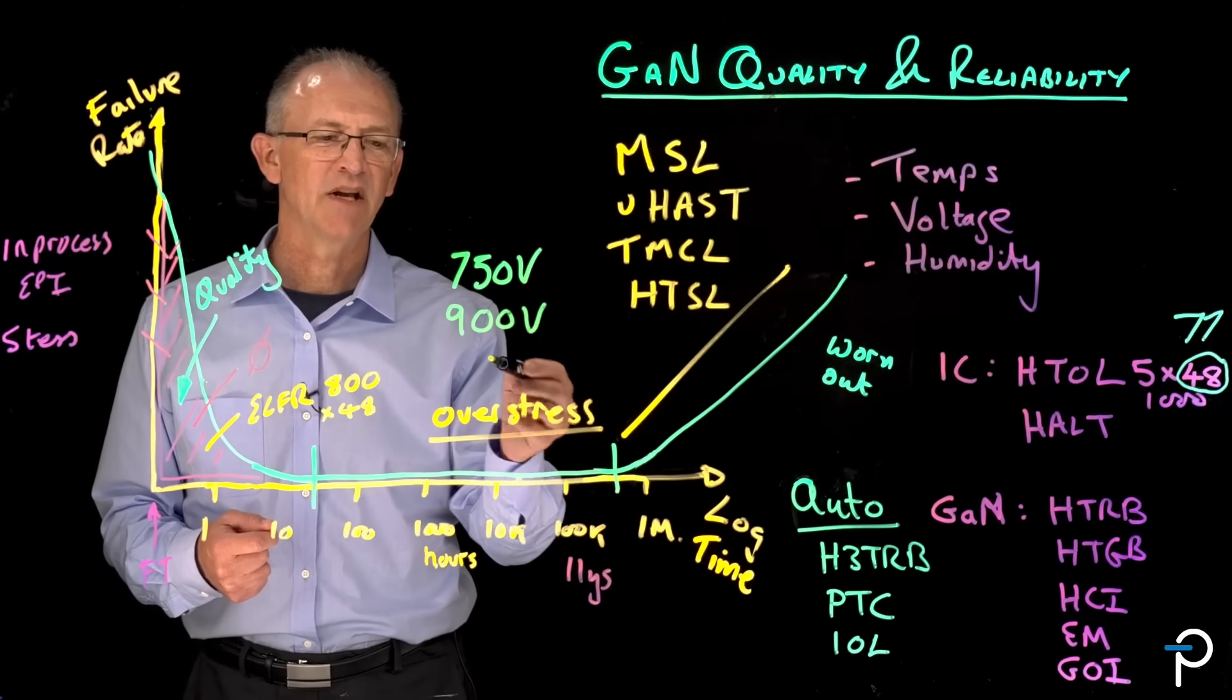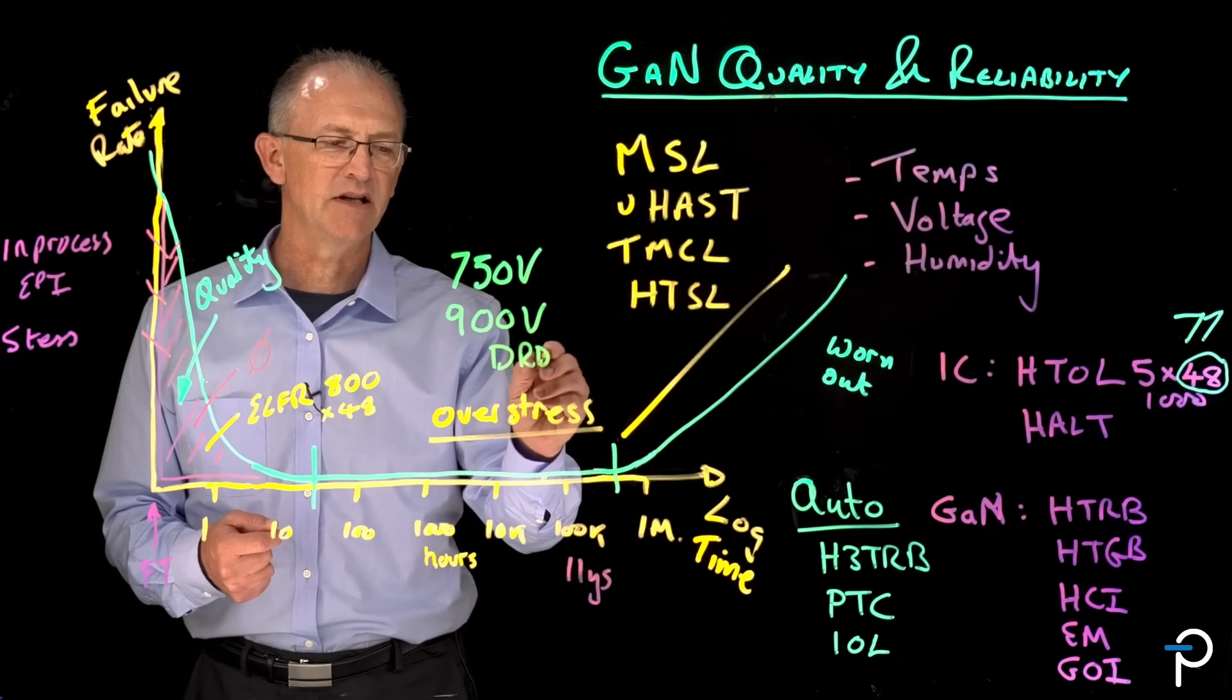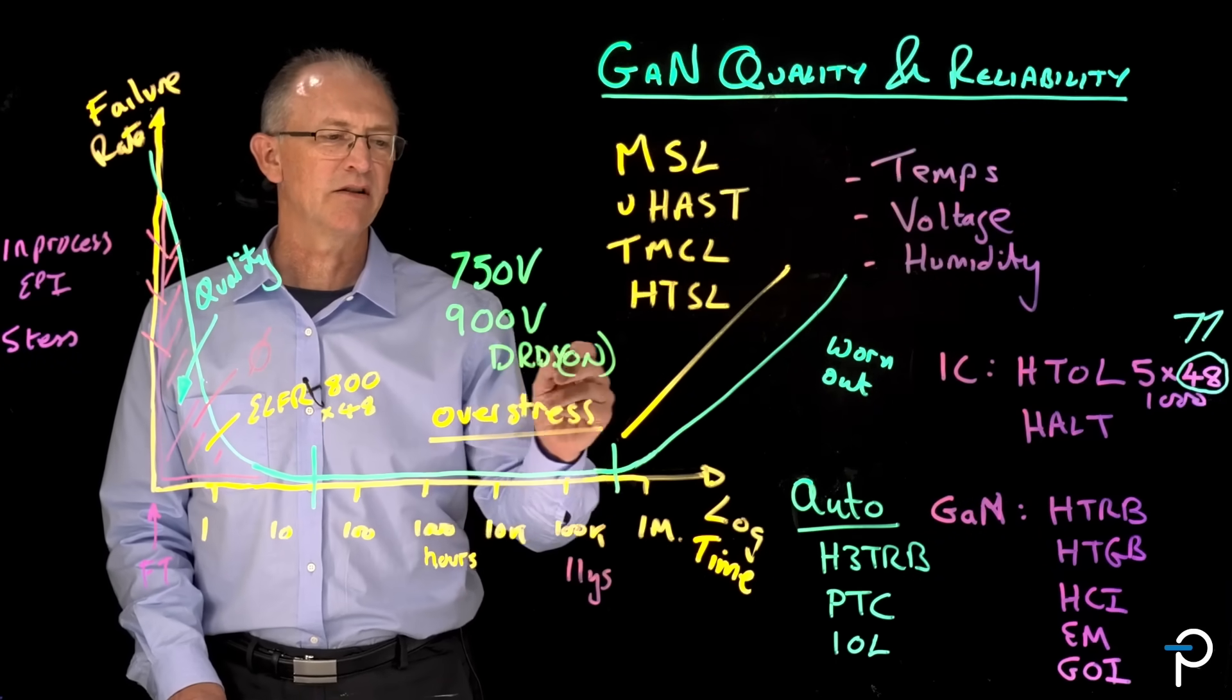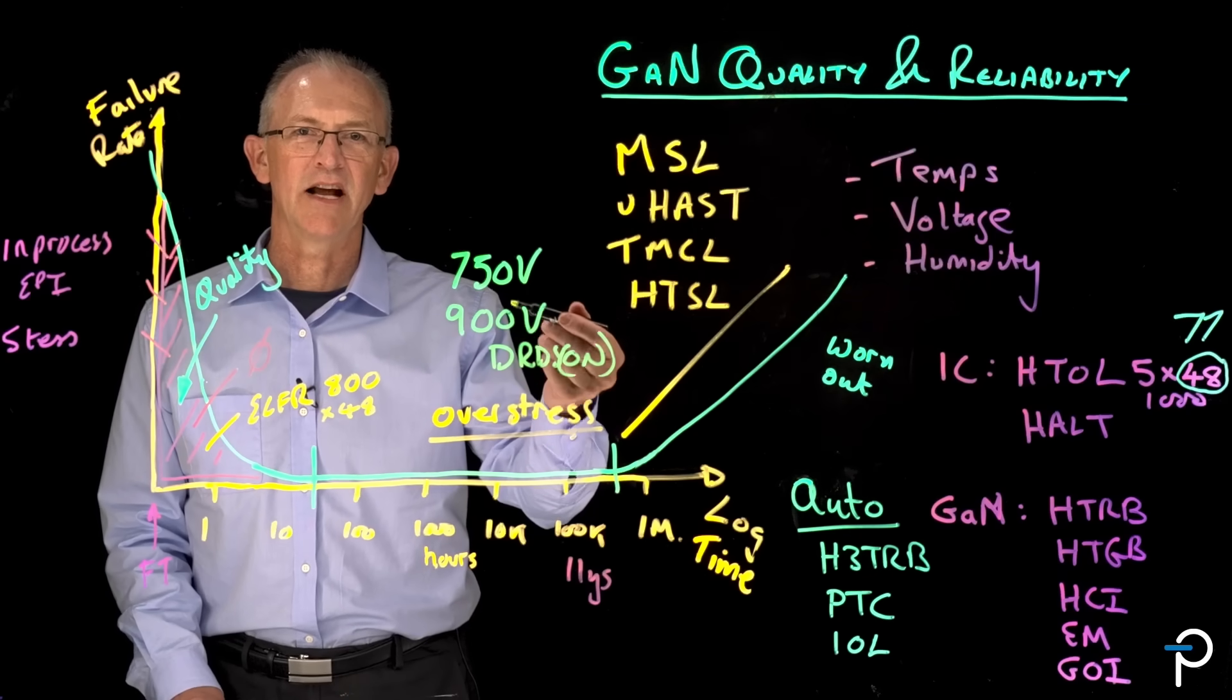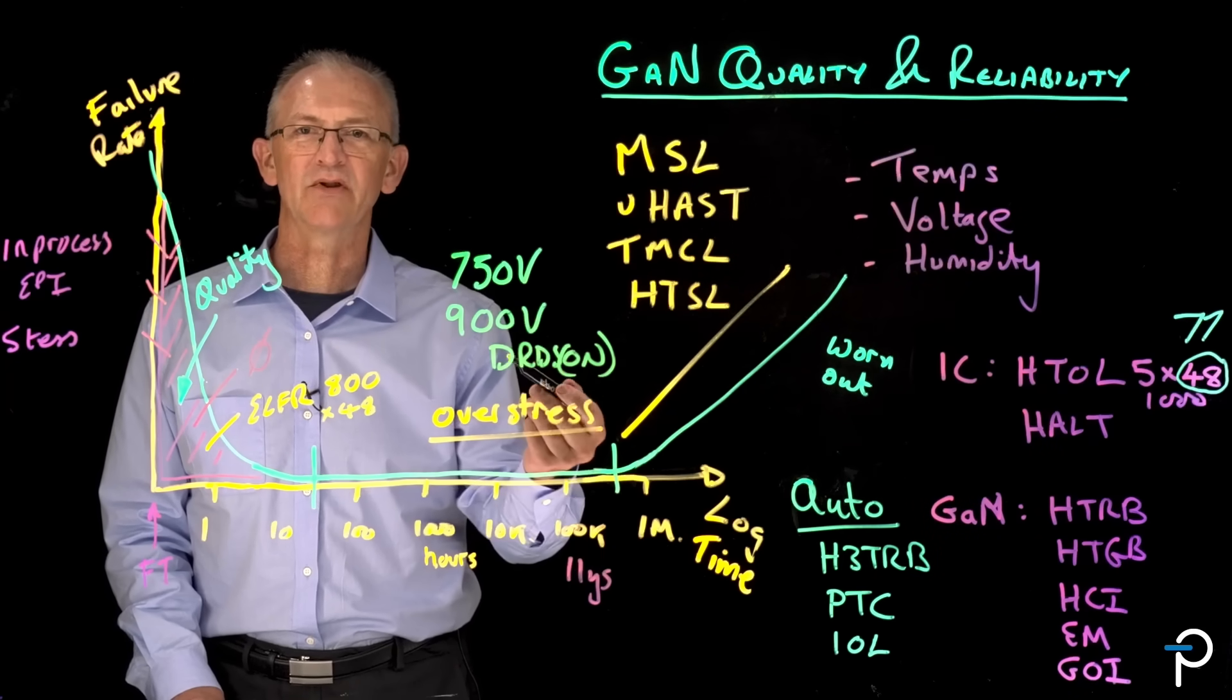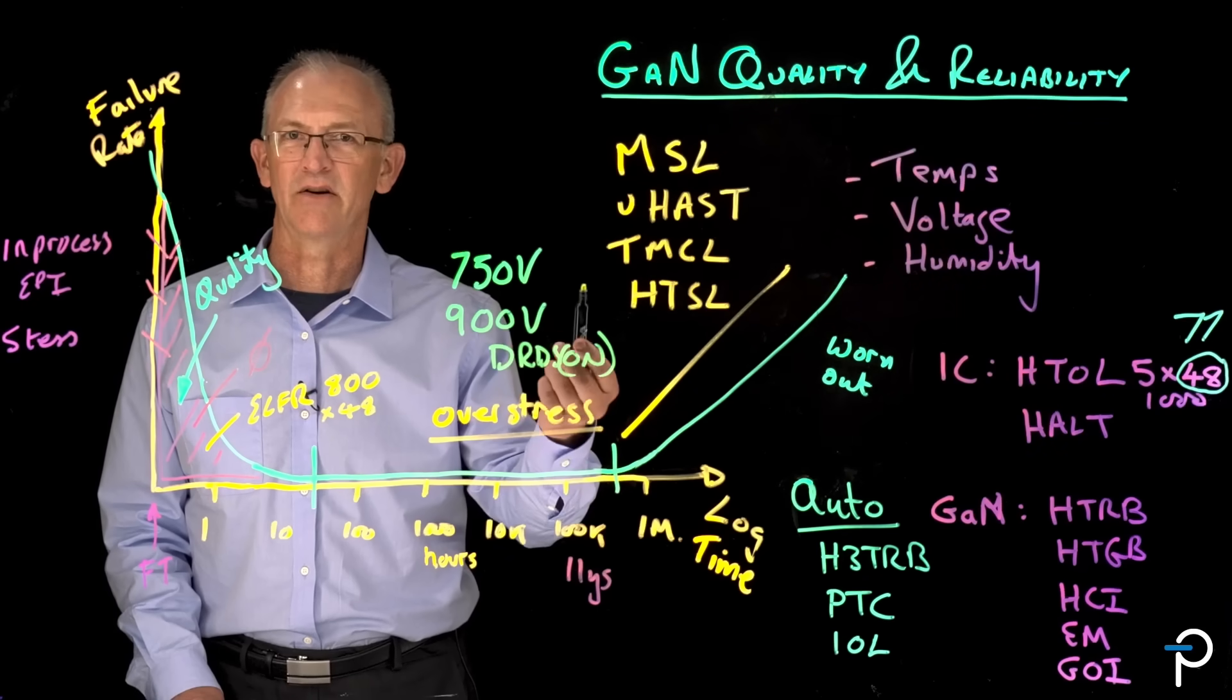Dynamic RDS-ON. And it turns out that when you apply high voltage to GaN, it actually increases the RDS-ON of the device. It recovers later, but under the initial voltage and for a short while afterwards, it is a higher RDS-ON.